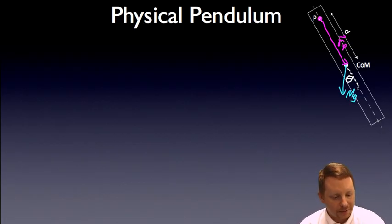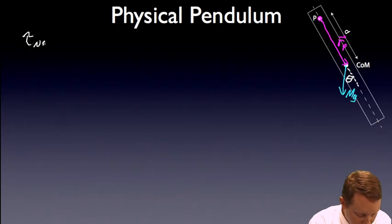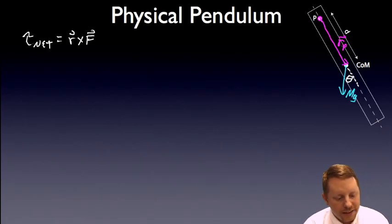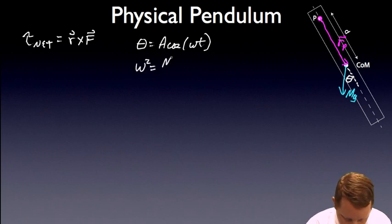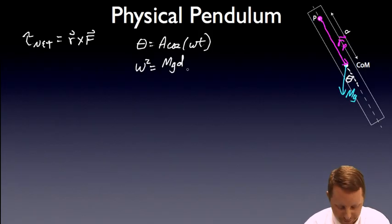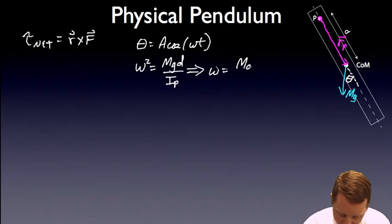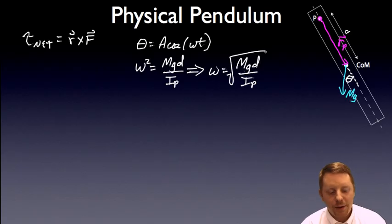Now we're going to derive almost the same way. We're going to say that our net torque, again, is going to be equal to r cross f, and we go through almost the exact same derivation we did before. The only difference now, we still have theta going to be equal to a cos omega t, and we will have omega squared equal to mg, we have a d instead of l, we just defined it a little differently, over the moment of inertia about point P. Omega, then, must be mgd over ip square root. Same thing we did previously.